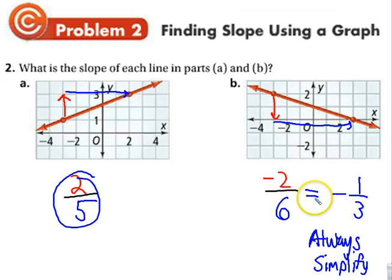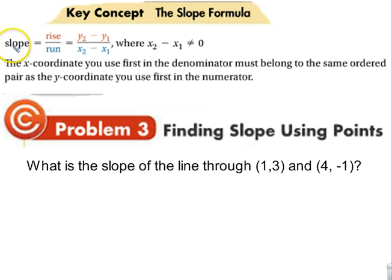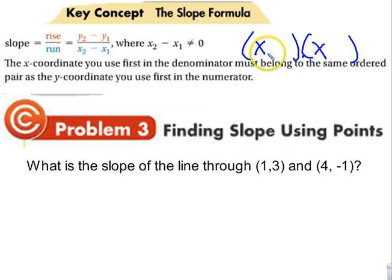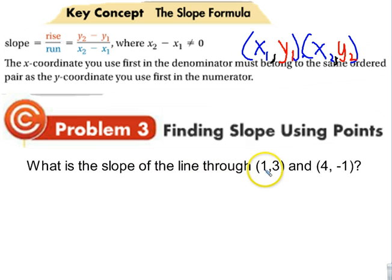Here's the slope formula: slope equals rise over run, which is the two Y values subtracted from each other over the two X values. Remember, X values are the first number in the ordered pair. So for two ordered pairs, we label them X1, X2, Y1, and Y2.